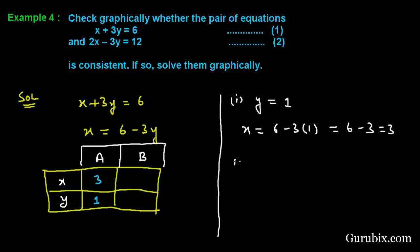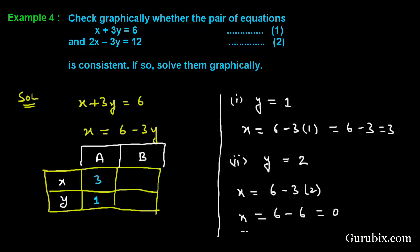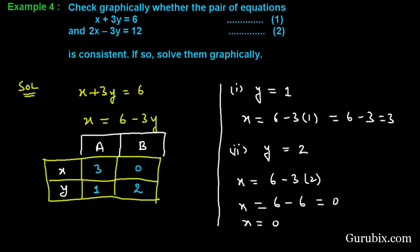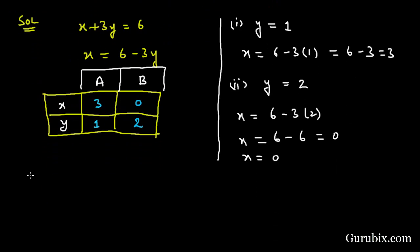Now we find the second point by putting y = 2. Then x = 6 - 3 × 2 = 6 - 6 = 0. So when y = 2, x = 0. These are the two points A and B on the line. The coordinates of A are (3, 1) and the coordinates of B are (0, 2).